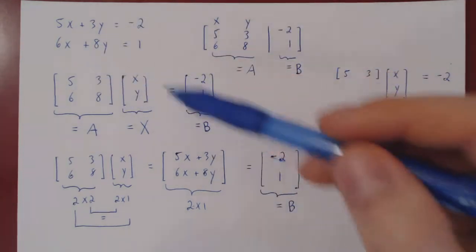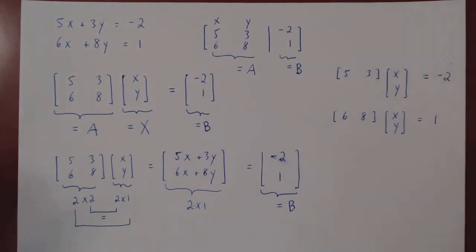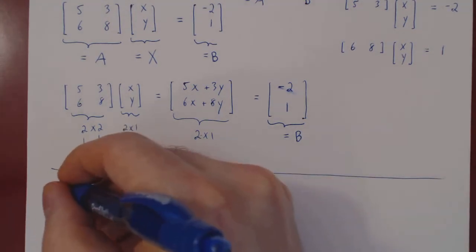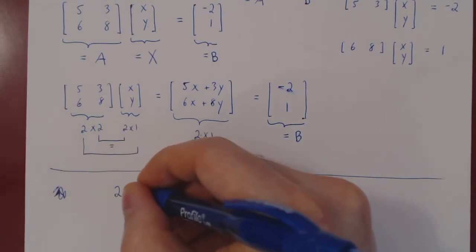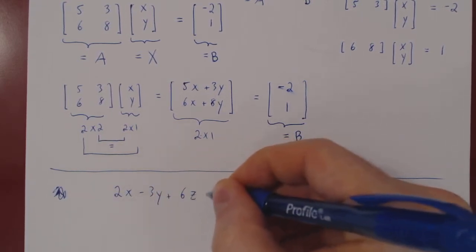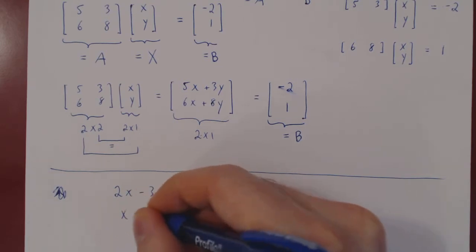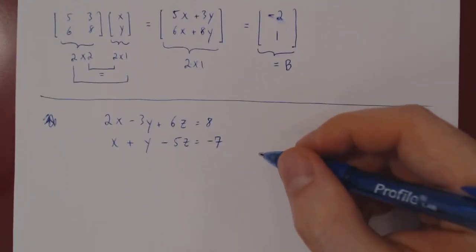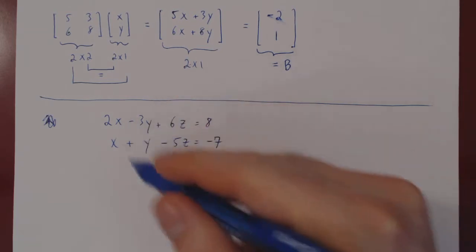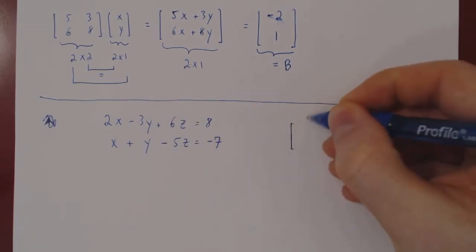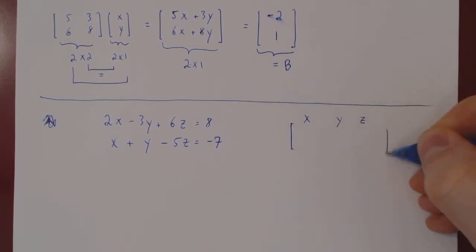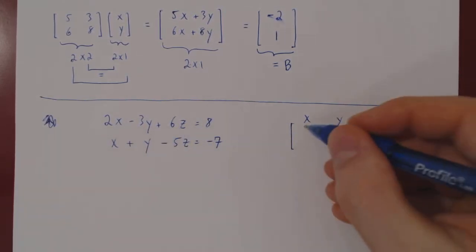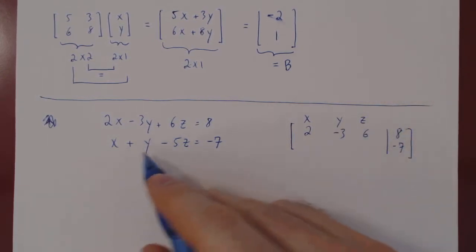Let's consider one more example. What if we had two equations and three unknowns? Suppose we have 2x minus 3y plus 6z equals 8, and x plus y minus 5z equals negative 7. We can rewrite this as an augmented matrix with three variable columns for x, y, z, the constant terms 8 and negative 7, and coefficients 2, negative 3, 6 in the first row, and 1, 1, negative 5 in the second row.